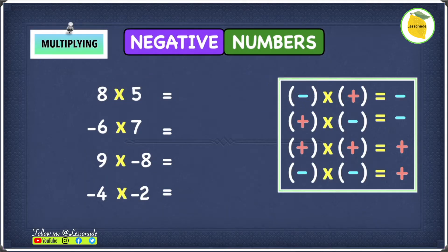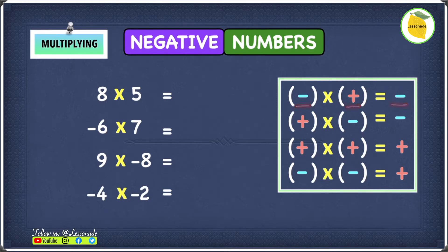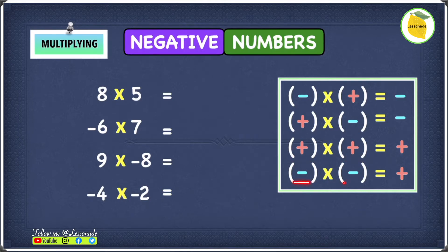Before we look at multiplying negative numbers, we need to first have a look at this rule. If you have a negative number times a positive number, then the answer will be negative. If you have a positive number times a negative number, then the answer will also be negative. If you have a positive number times a positive number, then the answer will be positive. If you're multiplying a negative number by another negative number, then the answer will be positive.